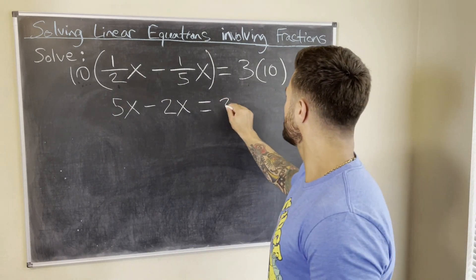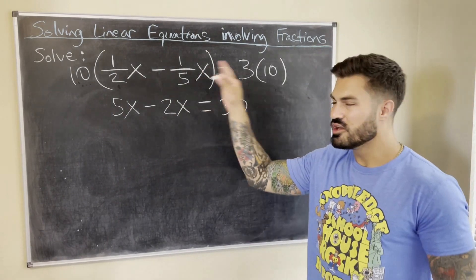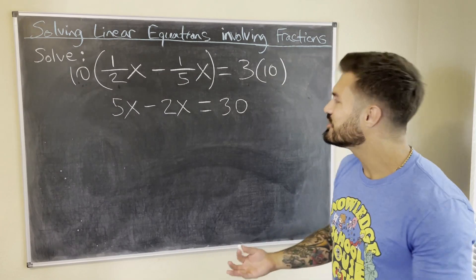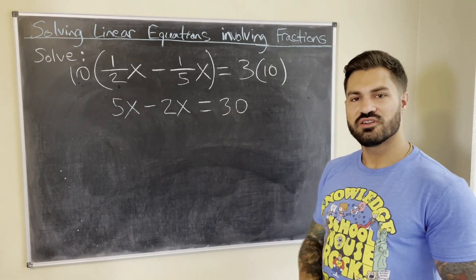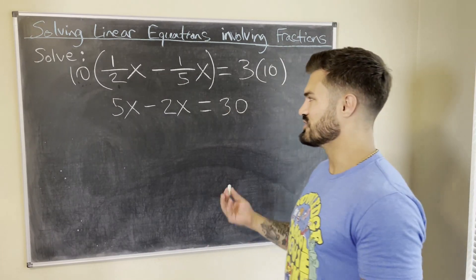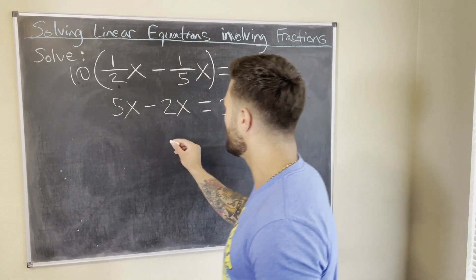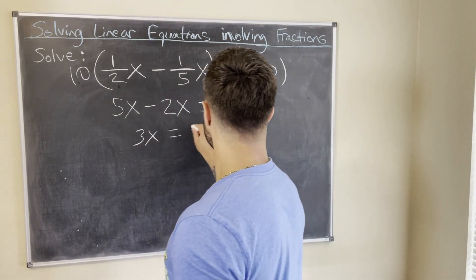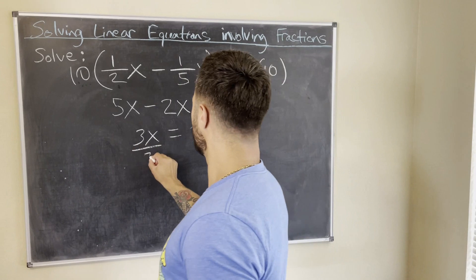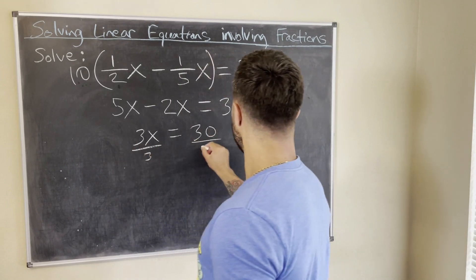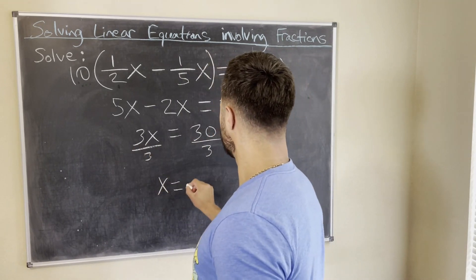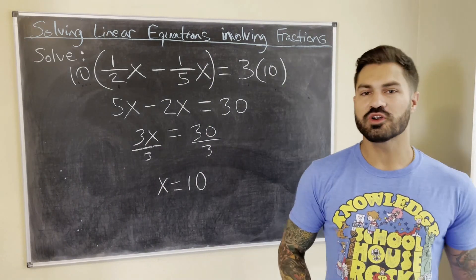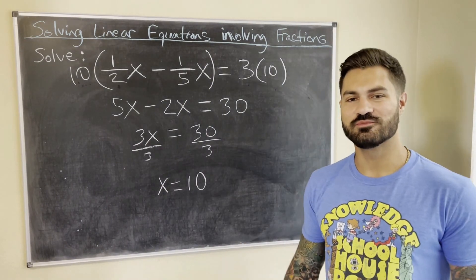That gives us 5x minus 2x equals 3 times 10, which is 30. Look how we took that equation involving fractions and turned it into a simple linear equation. Combining like terms: 3x equals 30, then dividing both sides by 3, we get x equals 10.